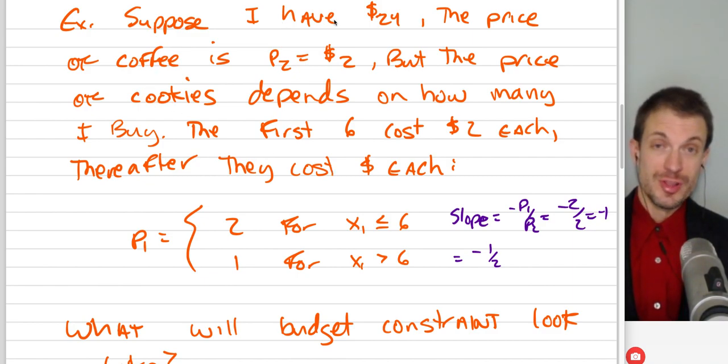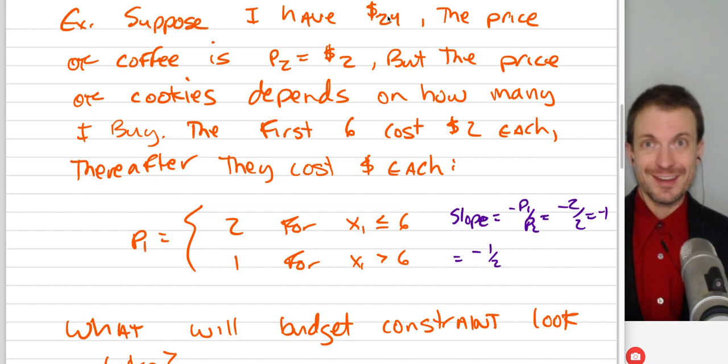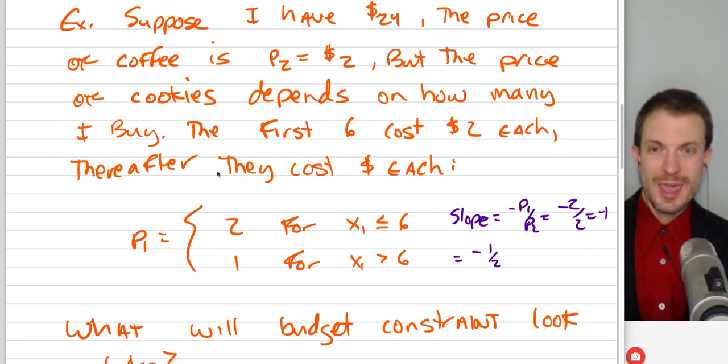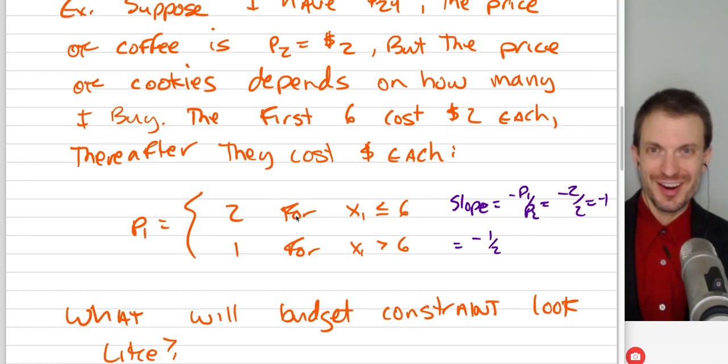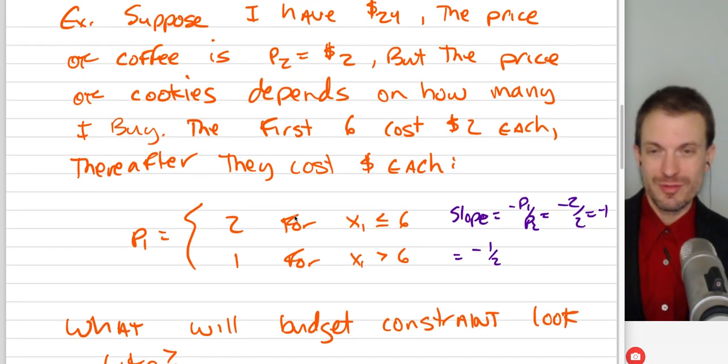So for instance, we have $24 available, that's the income. The price of coffee, one of the two goods, is going to be $2, we'll call that good two. The price of cookies is going to depend on how many cookies I buy. So the first six cookies will cost $2 each and thereafter they'll cost $1 each. So in some sense this is incentivizing large consumption of cookies, which is great for me.